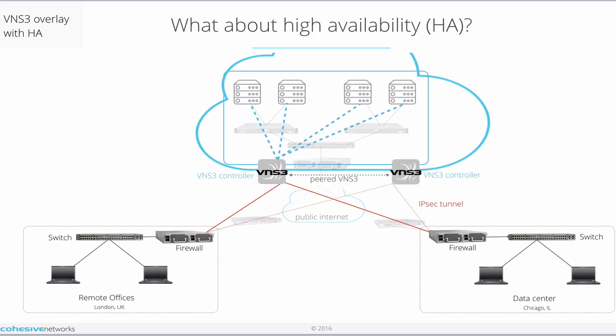So what if you need high availability? This diagram shows the same network topology with additional VNS3 high availability. When you have two peered VNS3 controllers, they exchange the given topology's routing information and share client server credentials and connectivity details. Any connected client servers can connect to either manager. In turn, both controllers will be able to access the clients, no matter which controller the client server is connected to at the time. Similarly, all IPsec connections to either manager are accessible via both controllers and via client servers.